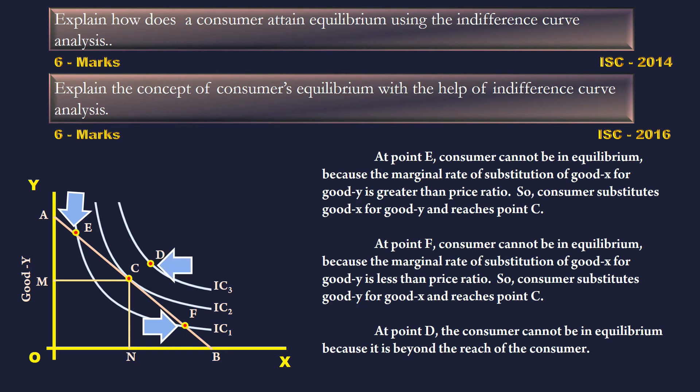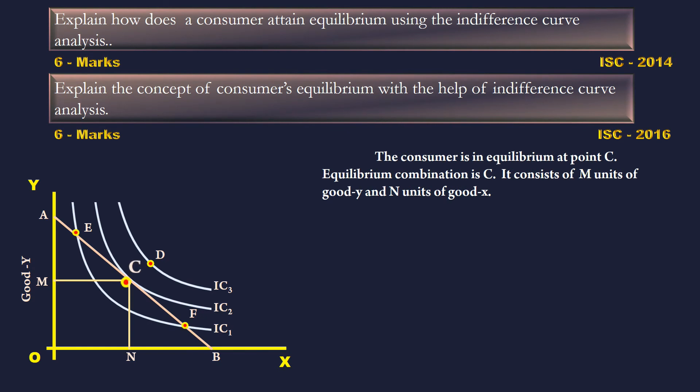At point D, the consumer cannot be in equilibrium because it is beyond the reach of the consumer. Therefore, the consumer is in equilibrium at point C. The equilibrium combination is C, which consists of M units of good Y and N units of good X.